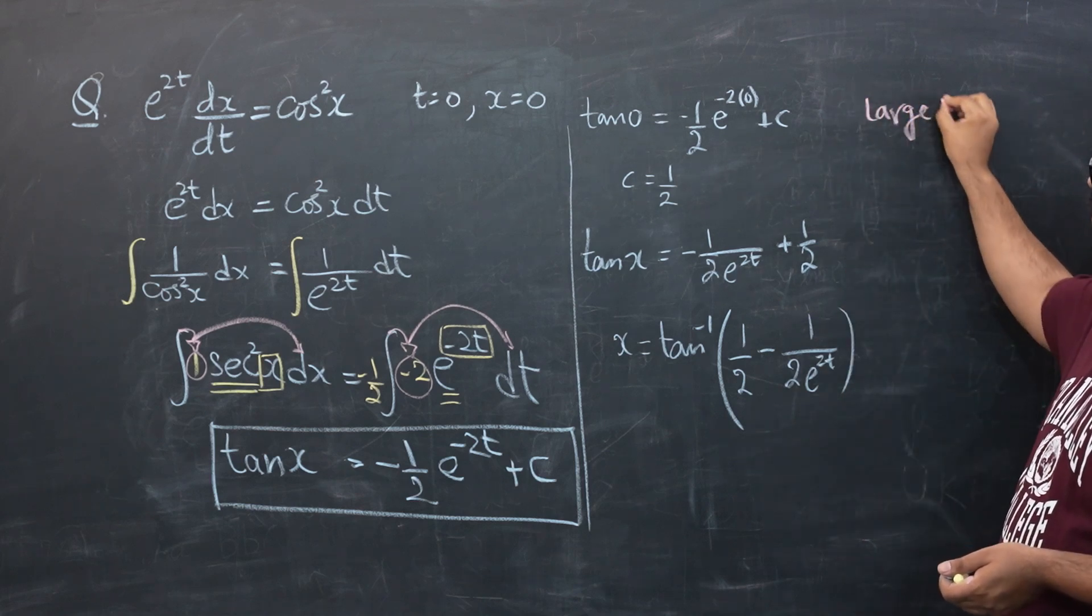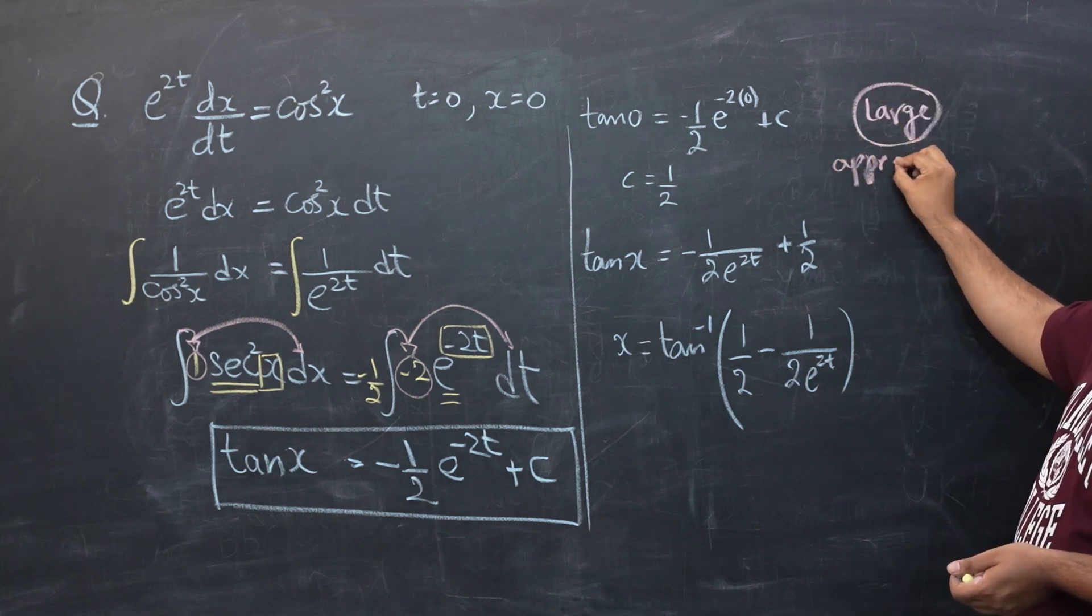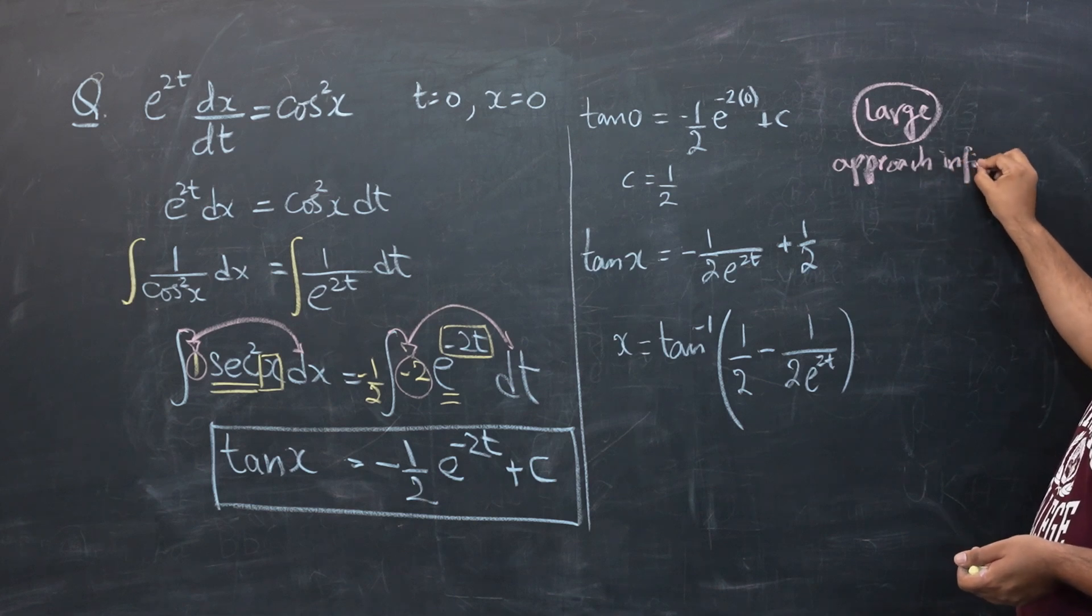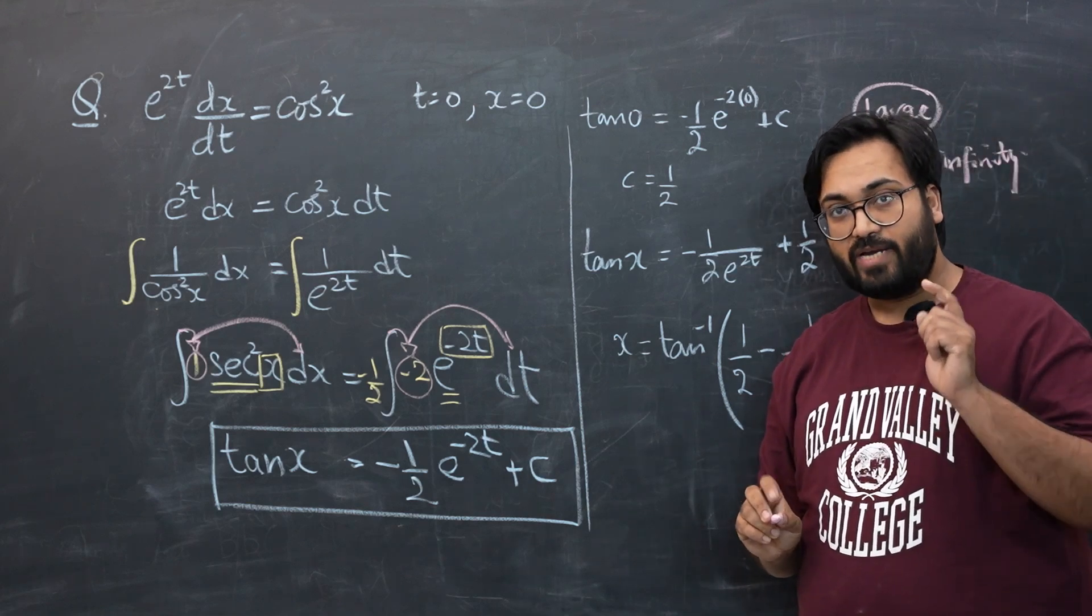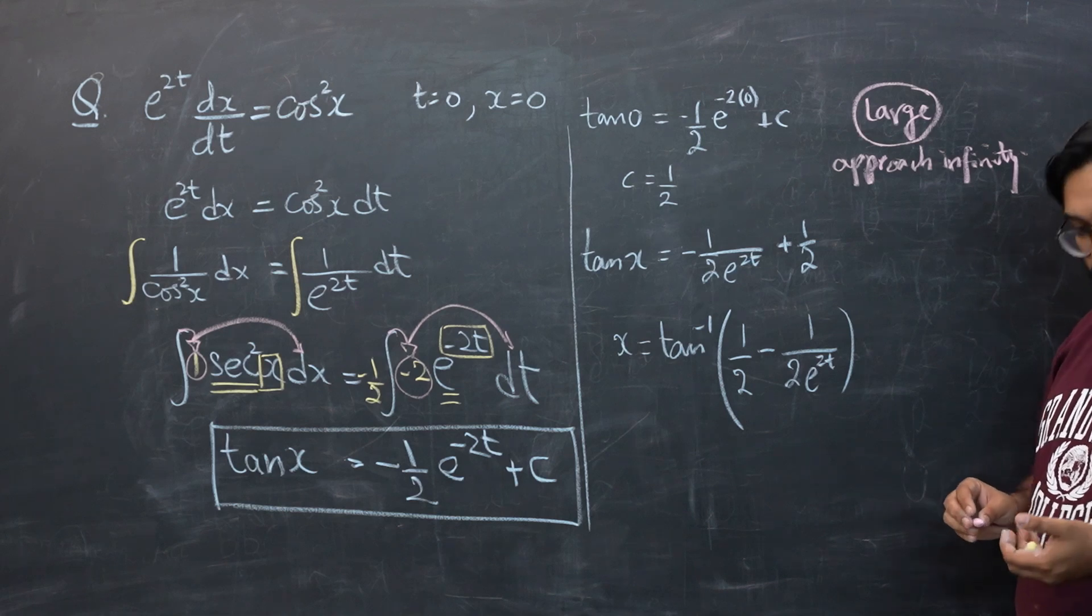So when they use the word large, this means you're approaching infinity. So this number is going to become so big that it's close to infinity. Now we know we do not understand infinities in the numerator generally, but whenever infinities are in the denominator they will result in a zero.